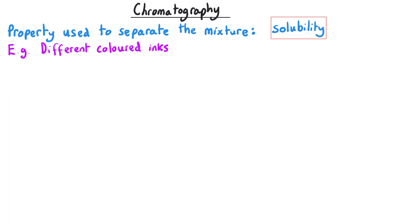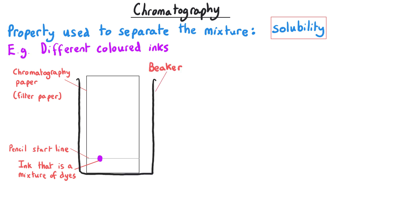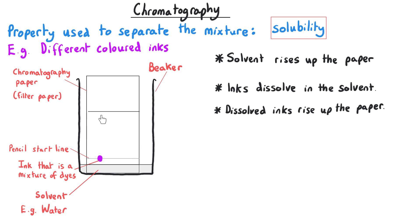Typically we'll use chromatography to separate out the different coloured dyes in something like an ink. We take a piece of chromatography paper or filter paper and mark a pencil line on it, and on this line we place our sample. This sample will be a mixture of different colours all together in the same place at first. We then place the paper into a beaker containing a solvent — typically water. The water rises up the paper and when it reaches the pencil line the ink dissolves in the solvent and gradually rises up the paper.